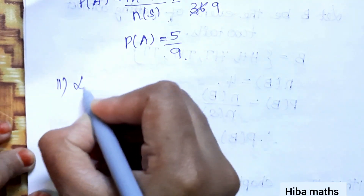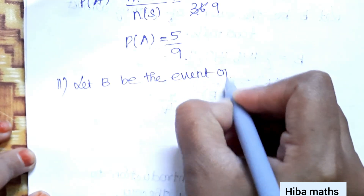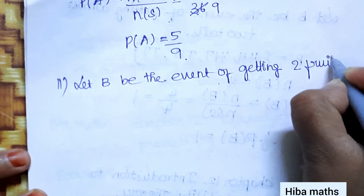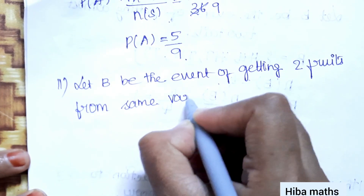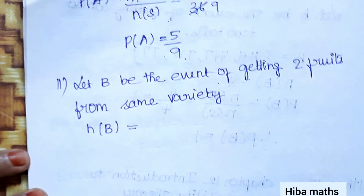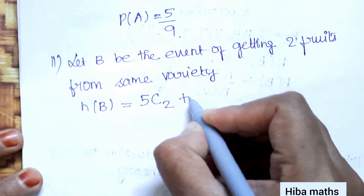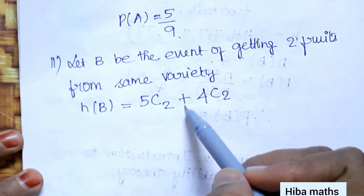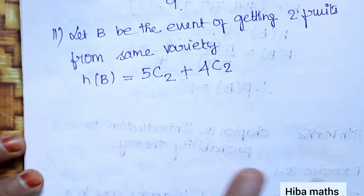For the second condition, if you take two fruits they could be of the same variety. Let B be the event of getting two fruits from the same variety. Now, n(B) is equal to the number of ways to choose two mangoes plus the number of ways to choose two apples, because both sub-cases involve the same variety.